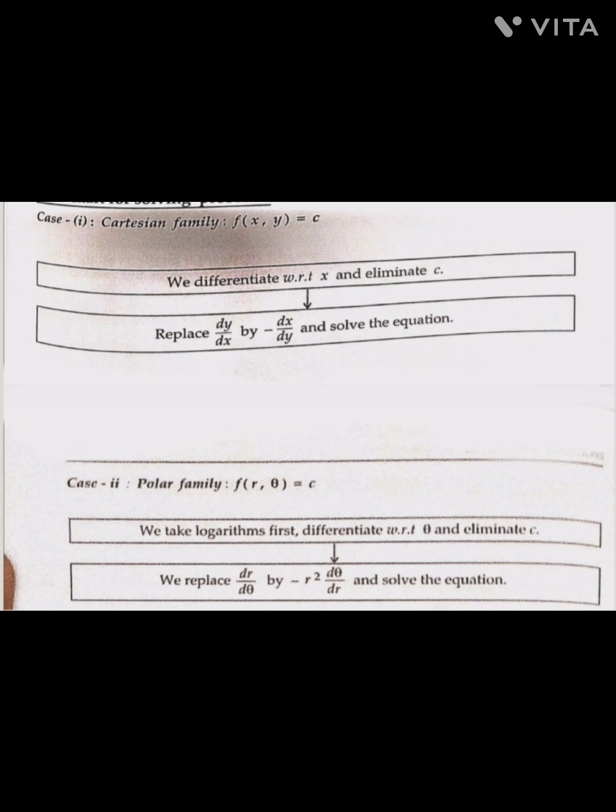Case 2: The polar family. It includes r and theta, f(r, θ) = c. We take logarithms first on both sides, LHS and RHS. Then we differentiate with respect to theta to eliminate the parameter c.